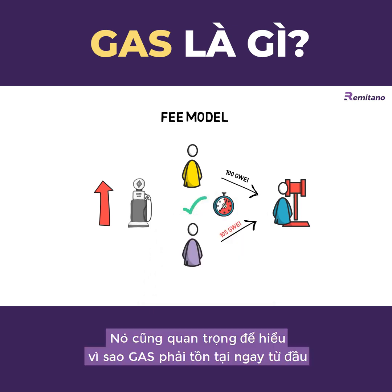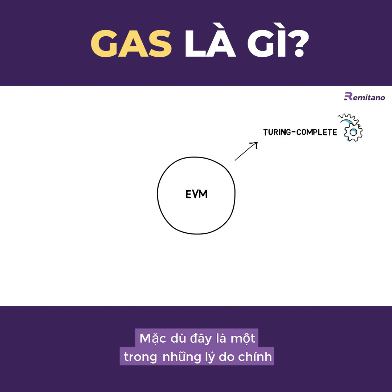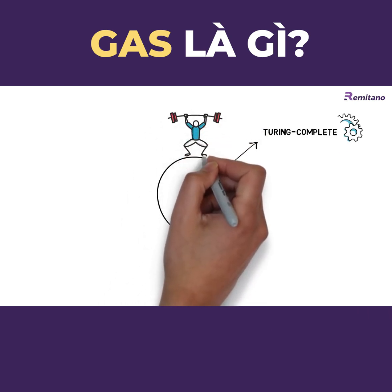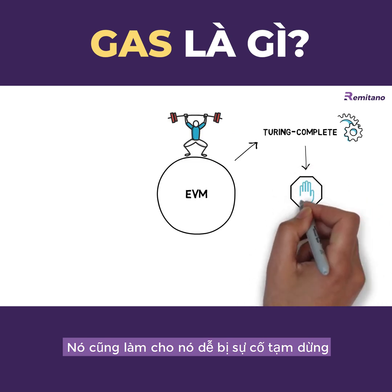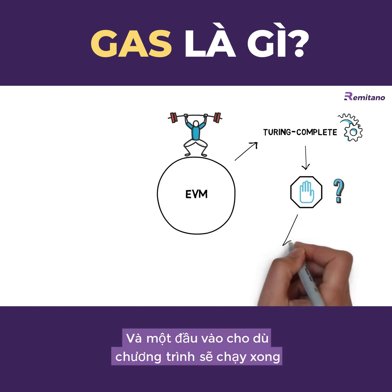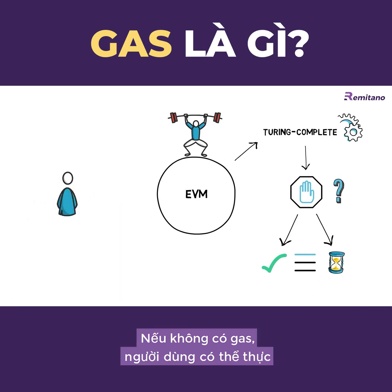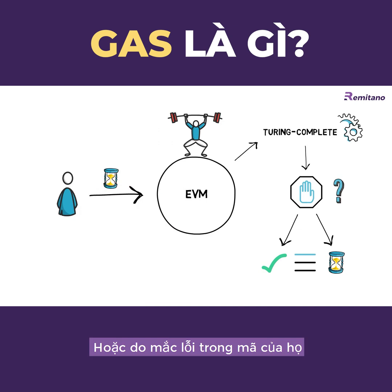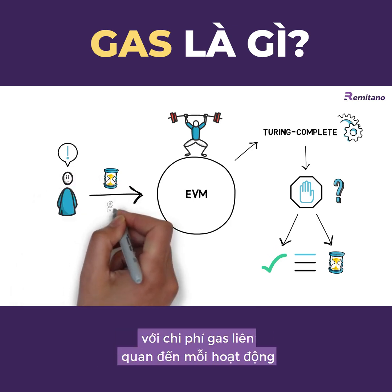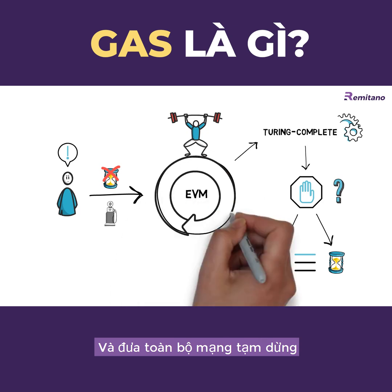To wrap up the gas explanation, it's important to understand why gas has to exist in the first place. The EVM, as a Turing-complete machine, allows for executing any arbitrary code. Although this makes Ethereum powerful, it also makes it vulnerable to the halting problem — the problem of determining whether a program will finish running or continue to run forever. Without gas, a user could execute a program that never stops, either by mistake or maliciously. Ethereum introduced a gas cost for each operation to prevent a program from running forever and bringing the whole network to a grinding halt.